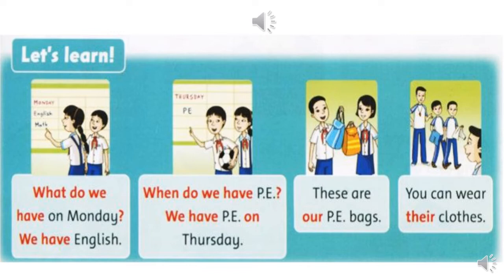Thì các bạn thấy chữ 'our' — của chúng tôi, của chúng ta. 'Their' — của họ, của chúng nó. Now listen again. What do we have on Monday? We have English. When do we have PE? We have PE on Thursday. These are our PE bags. You can wear their clothes.